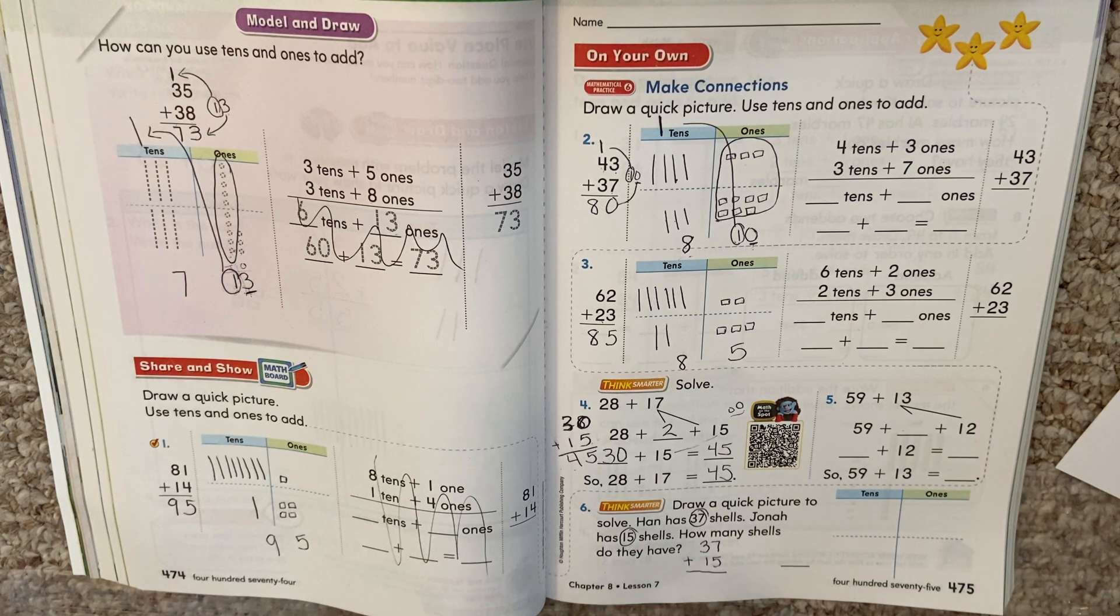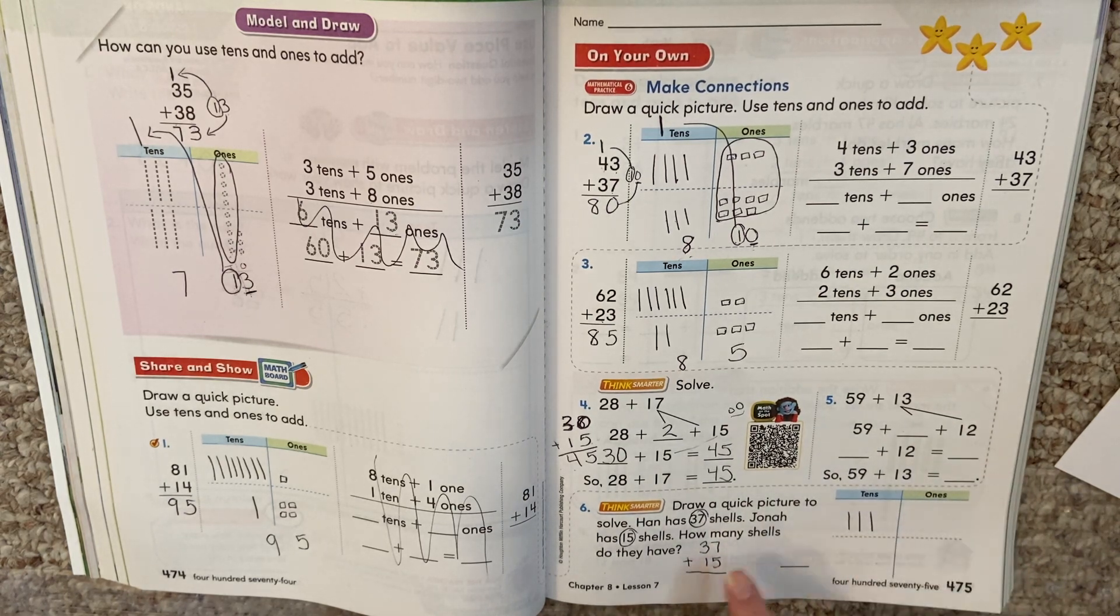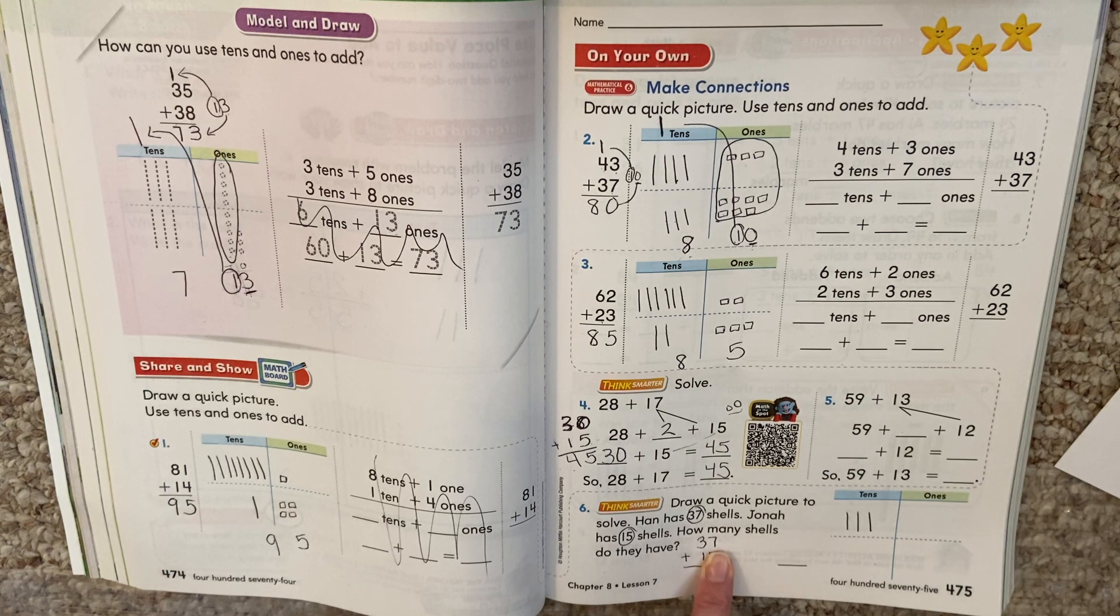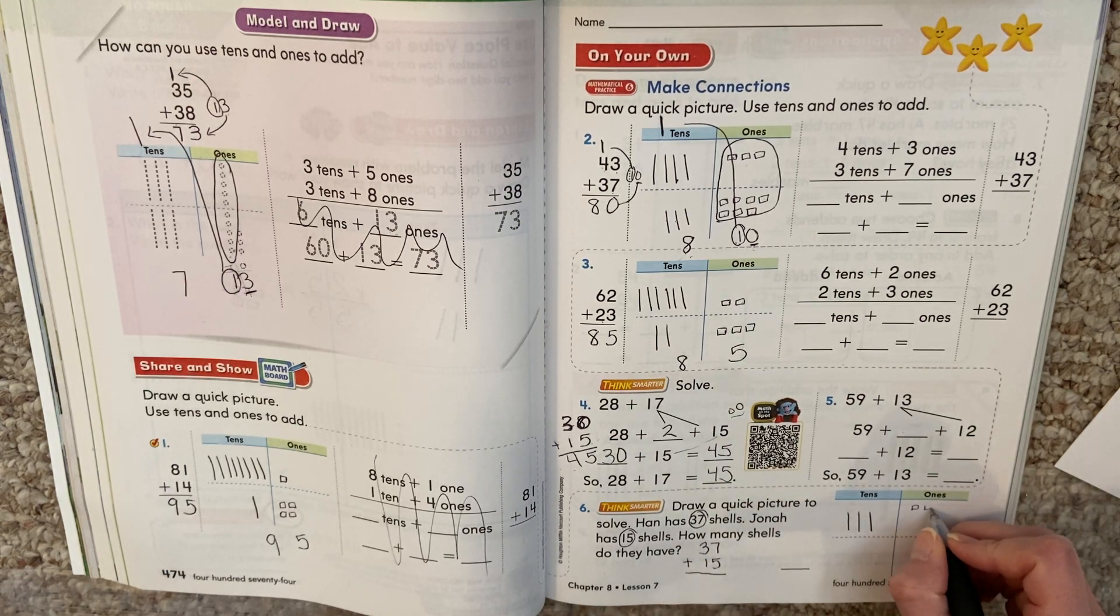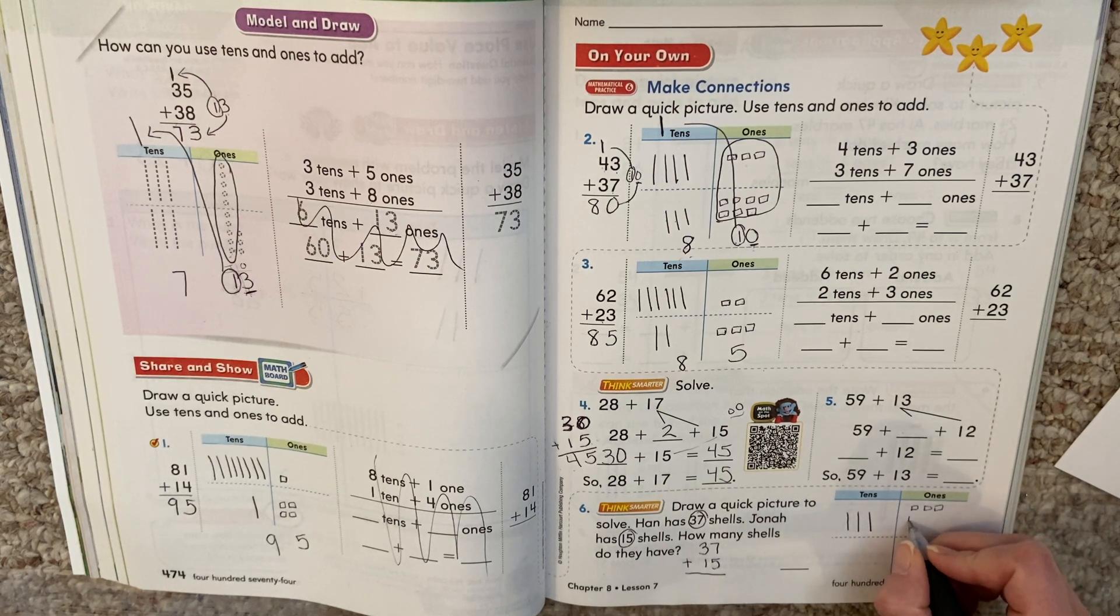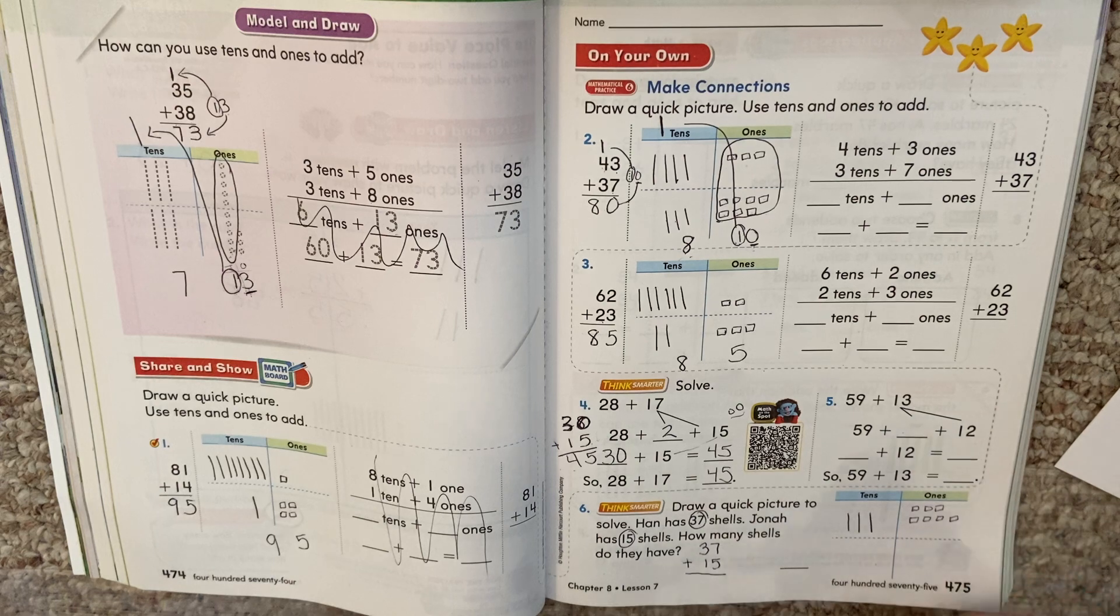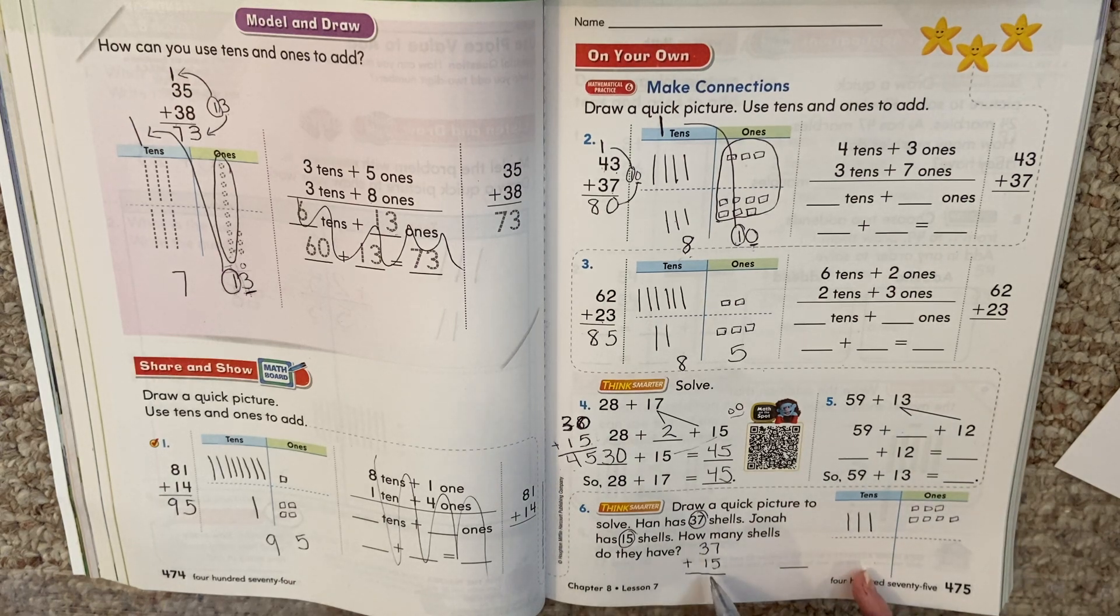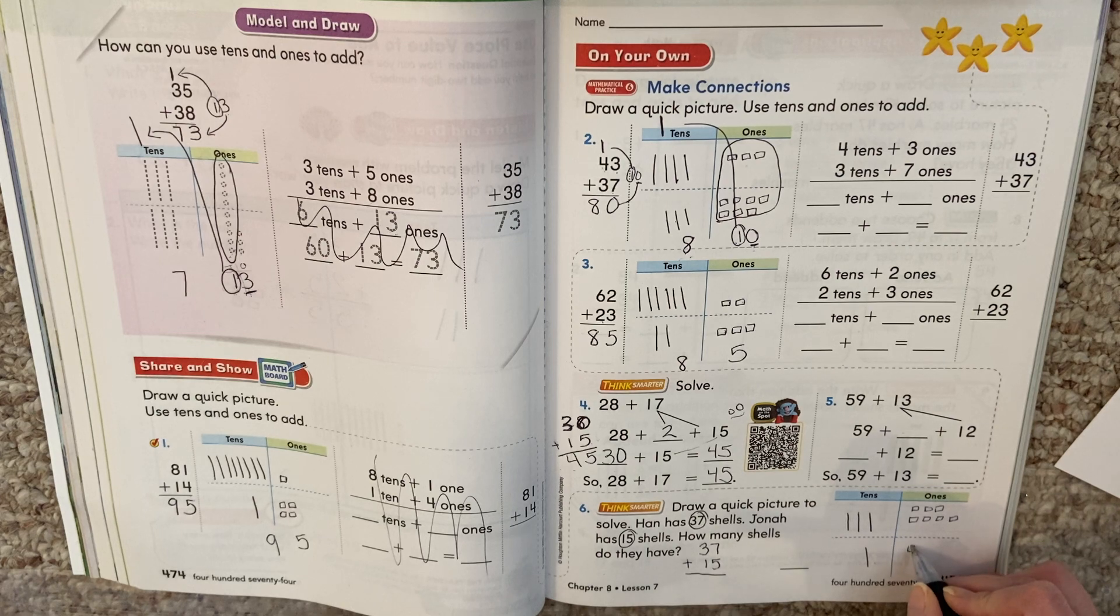And then we're going to model it out. So think, how many 10s do we have? Well, we have three 10s. So we put our three 10s. How many ones? 7 ones. So if you want to pause while you're modeling this out, you can. Because I know I might write faster than you do. Then we have 15, 1 ten, 5 ones.